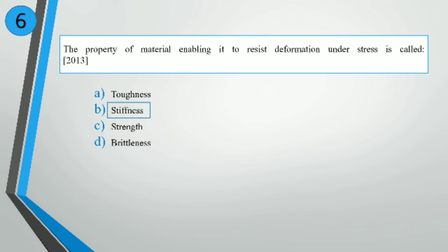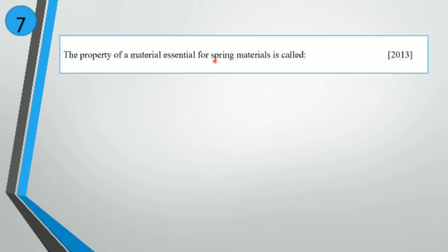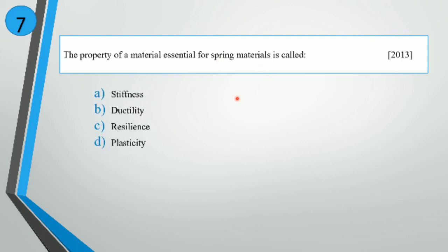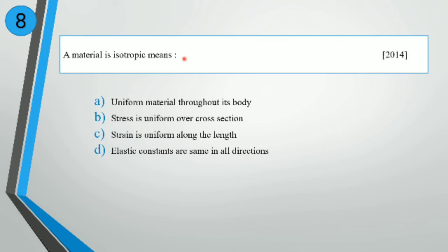The property of material essential for spring materials is called stiffness. A material is isotropic if it has uniform material properties throughout its body — the same properties at a point in all directions.